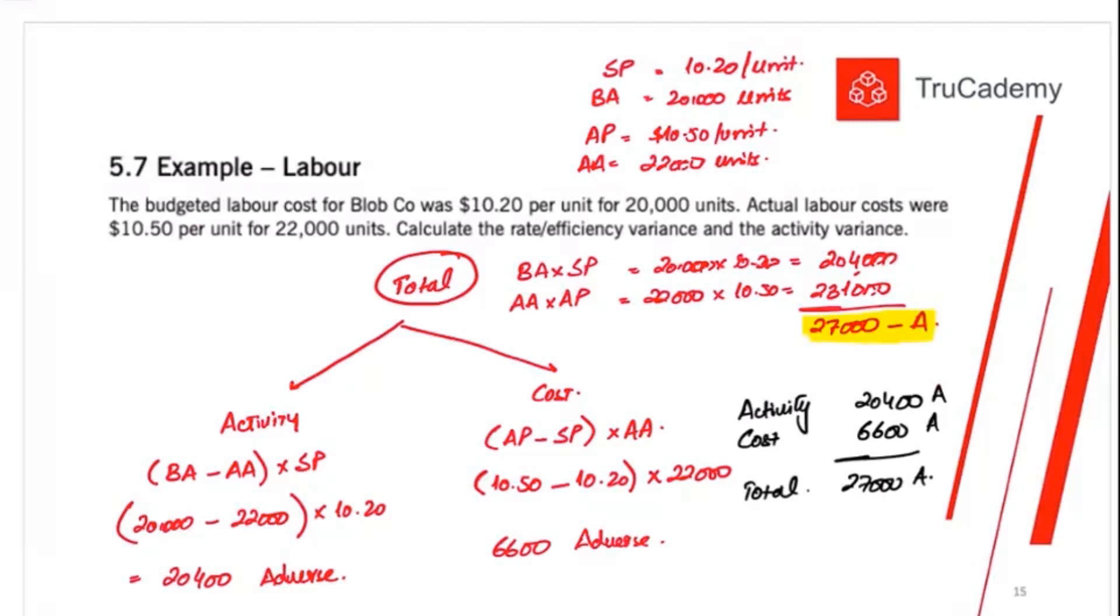Now what is happening here? Activity variance. Labor put more efforts than they were supposed to put. So they are working extra. And because of that extra work or activity, we paid extra to the labor, maybe possibly to cover up extra hours. We paid extra overtime, maybe to the labor, which led to labor cost variance of adverse. Clear with this story so far? Yes, sir.